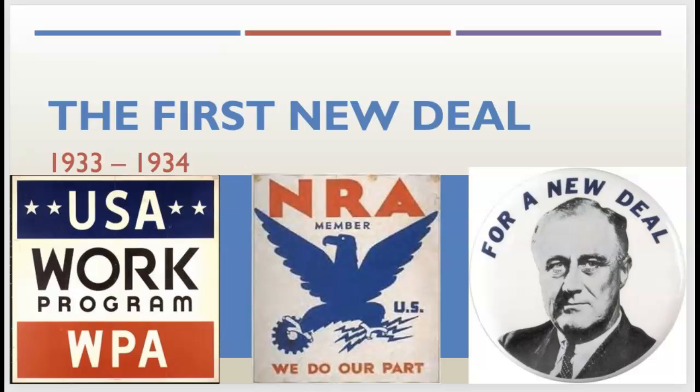A lot of the programs FDR is going to implement with the New Deal were actually things that Hoover was doing, but the issue was Hoover was only doing them at a local level. He wanted states and localized governments to take action, whereas FDR said we need the federal government to help put people back to work and get the economy going again. FDR gets some ideas from Hoover's programs, but he is willing to take a more powerful approach using the federal and national government to issue the reforms.